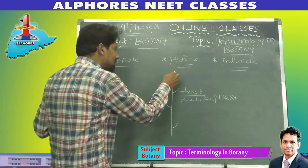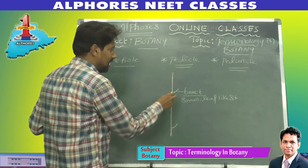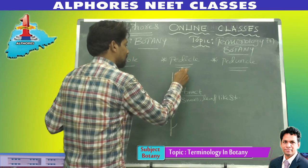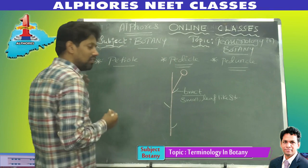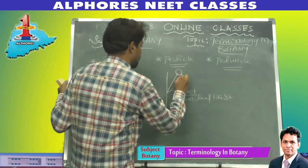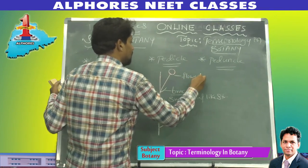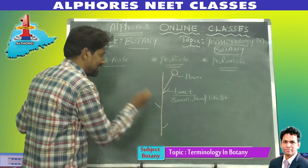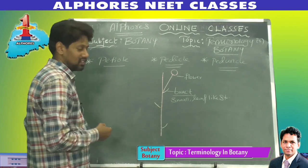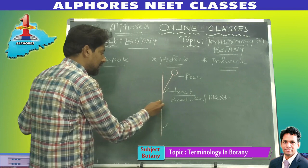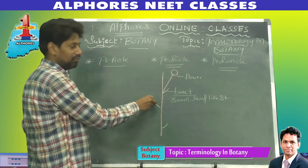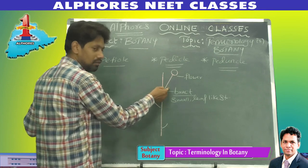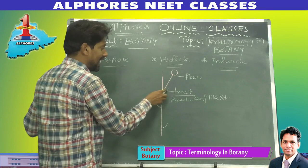From the axil of this bract, a flower is developed. This angle between the bract and the axis is called the axil. So a flower is developed from the axil of the bract.